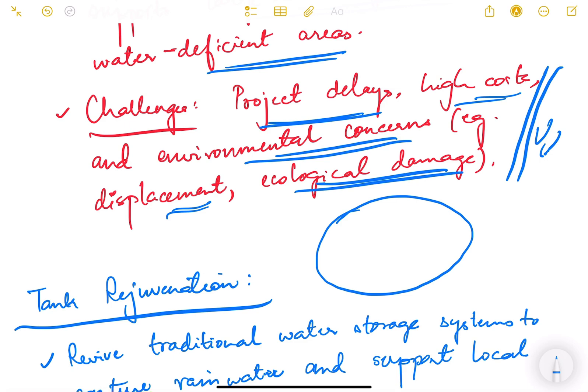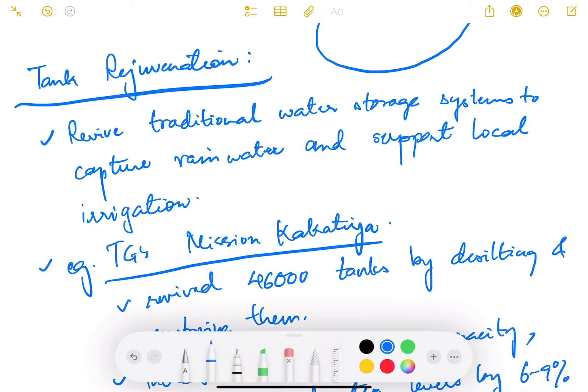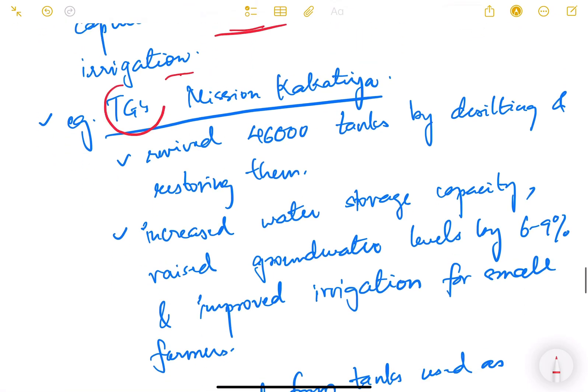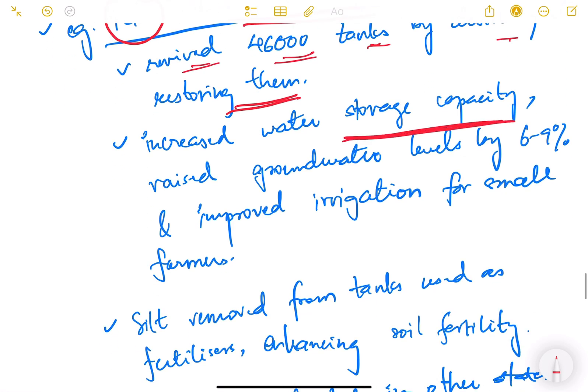The next one is tank rejuvenation. We have traditional tanks, especially in southern and eastern India, so we have to revive such traditional storage systems by capturing rainwater and supporting local irrigation. Telangana has done a good job under Mission Kakatiya. There's a revival of 46,000 farm tanks by desilting and restoring them, which has increased water storage capacity.